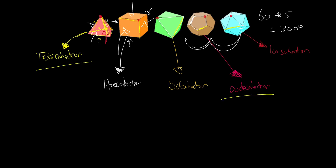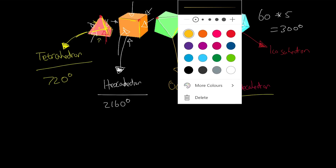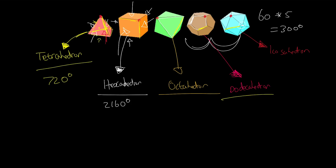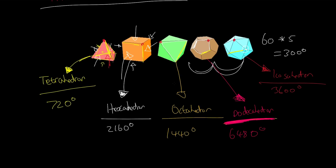In terms of their angles — if you take all the angles in all the polygons of each solid and add them up — a tetrahedron totals 720 degrees, a hexahedron totals 2160 degrees, an octahedron totals 1440 degrees, a dodecahedron totals 6480 degrees, and an icosahedron totals 3600 degrees.